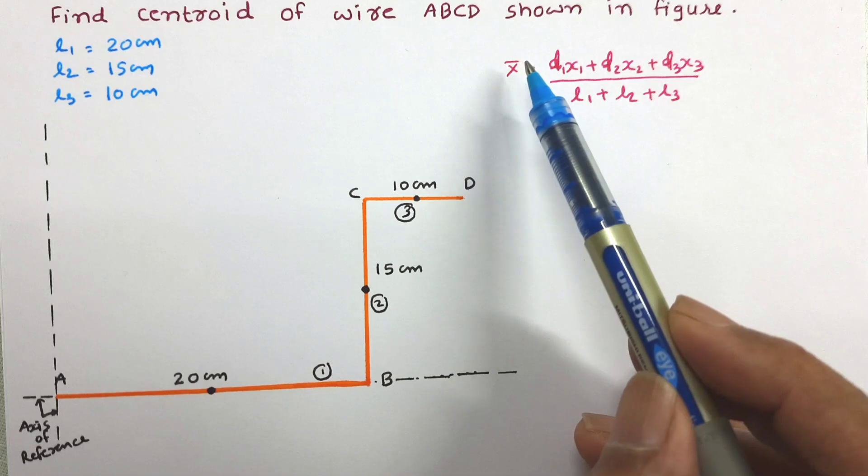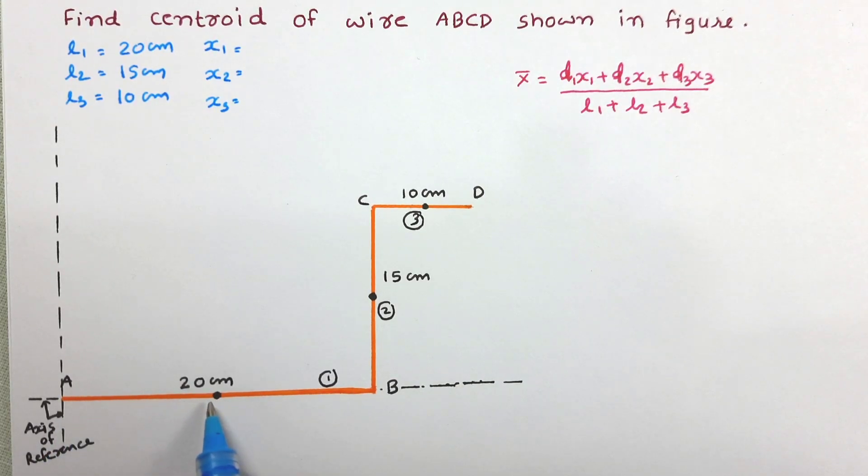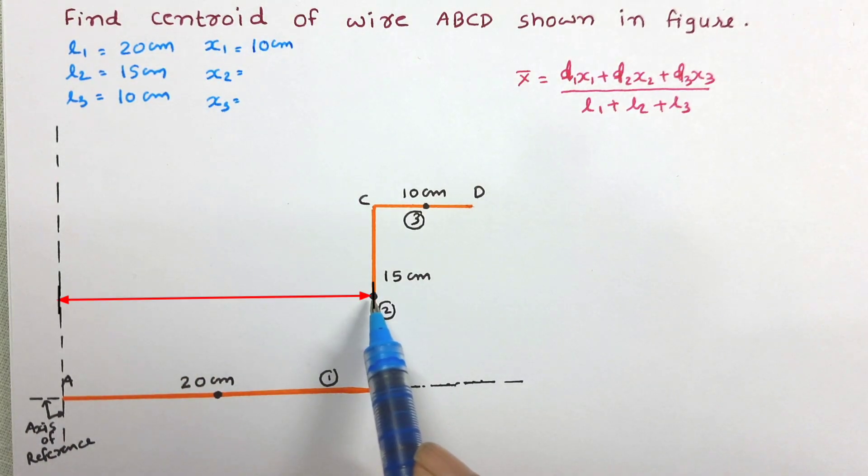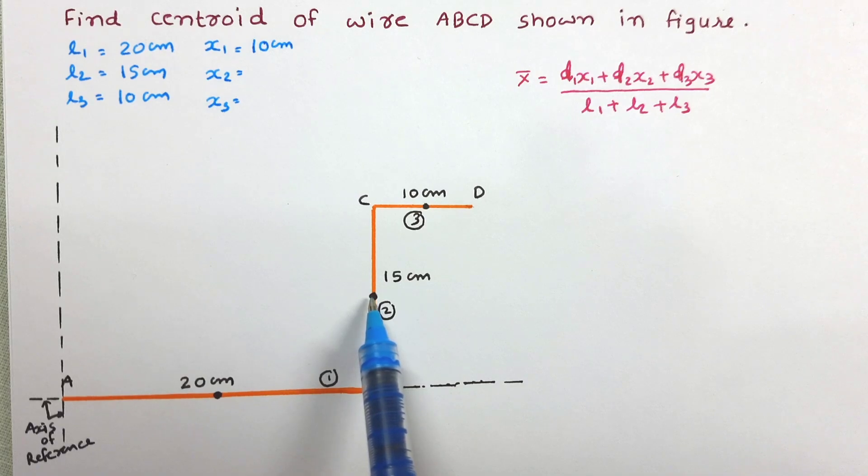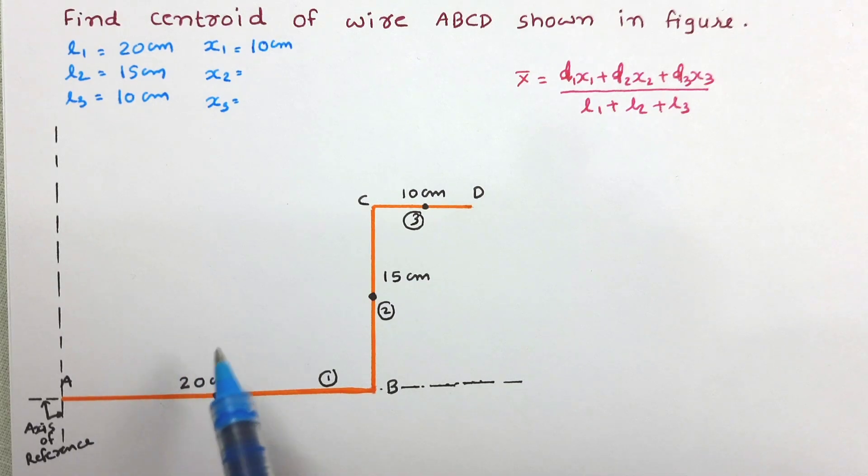Now we need x₁, x₂, and x₃ to determine x̄. x₁ is the distance of centroid of first part from y axis, means parallel to x axis. Total length of wire is 20 and this is the center point of wire, so the distance of centroid along x axis will be half of it, so it will be 10 cm. This is the centroid of wire 2, and the distance of this centroid from y reference axis is 20 cm.